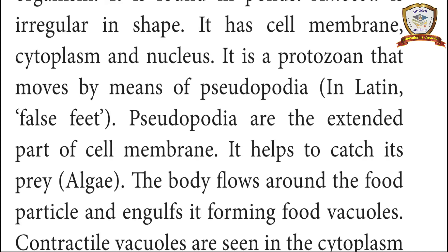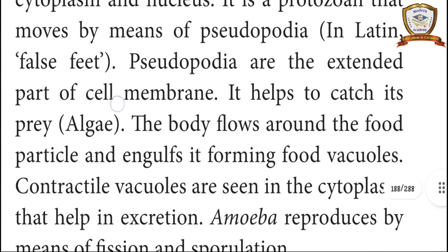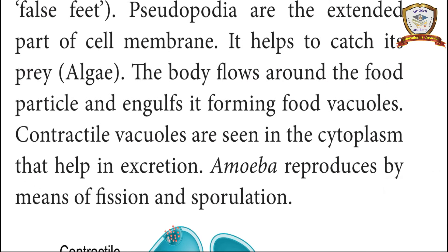Pseudopodia help to catch its prey, such as algae. The body flows around the food particles and engulfs it, forming food vacuoles. Contractile vacuoles in the cytoplasm help in excretion. Amoeba reproduces by means of fission and sporulation.